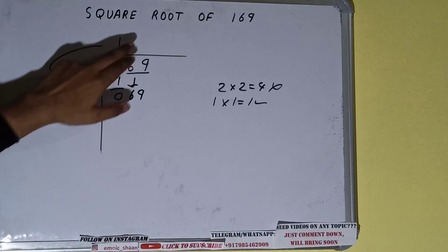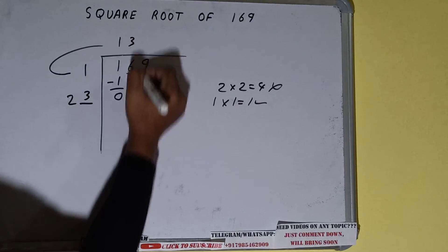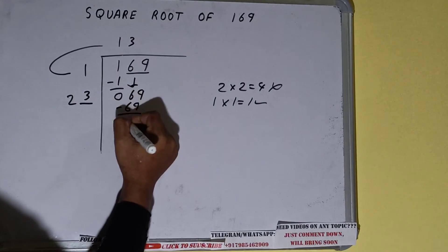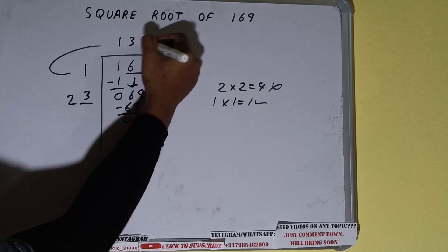Now whatever number we write here we have to write here also. So if we write 3 here and 3 here we'll get 69 and on subtracting we'll get 0.